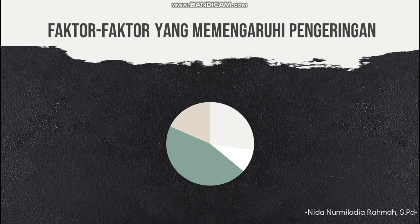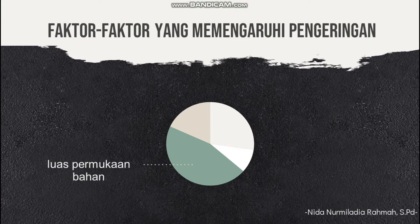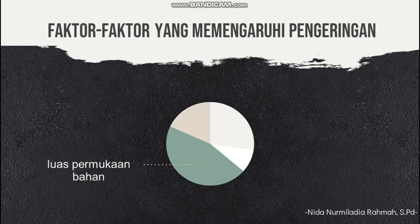Ada beberapa faktor yang mempengaruhi pengeringan. Yang menjadi faktor utama yaitu luas permukaan bahan. Semakin besar luas permukaan bahan, bisa lebih cepat pengeringannya. Luas permukaan ini bukan berarti semakin besar bendanya — justru semakin kecil benda tersebut, luas permukaannya akan semakin besar. Seperti padi yang kecil-kecil, masing-masing padi punya luas permukaan, sehingga total luas permukaannya besar dan bisa mempercepat proses pengeringan.